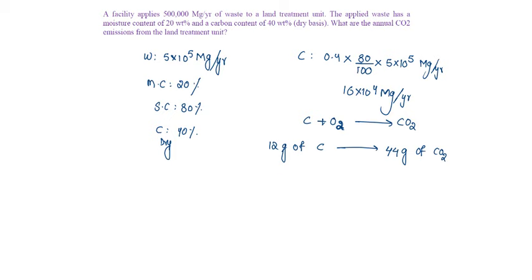Then 16×10^4 megagrams of carbon will produce (44/12) × 16×10^4 megagrams of CO2 emission per year. That is 58,666.67 megagrams of CO2 emission per year.